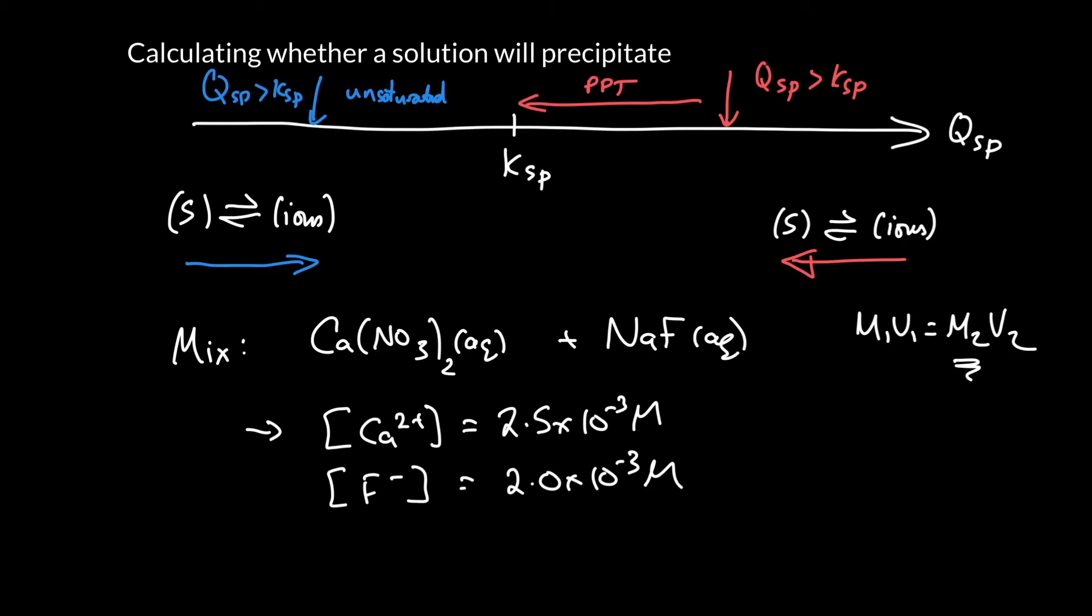So the question is, what about the other ions? What about the nitrate ion? And what about the sodium ion? Well, we've seen already that those ions are incredibly soluble. There are very few compounds that will not dissolve to extremely high levels that contain nitrate and sodium. So we can pretty much learn to ignore those ions. So we can focus on the ones that we know we'll have problems with.